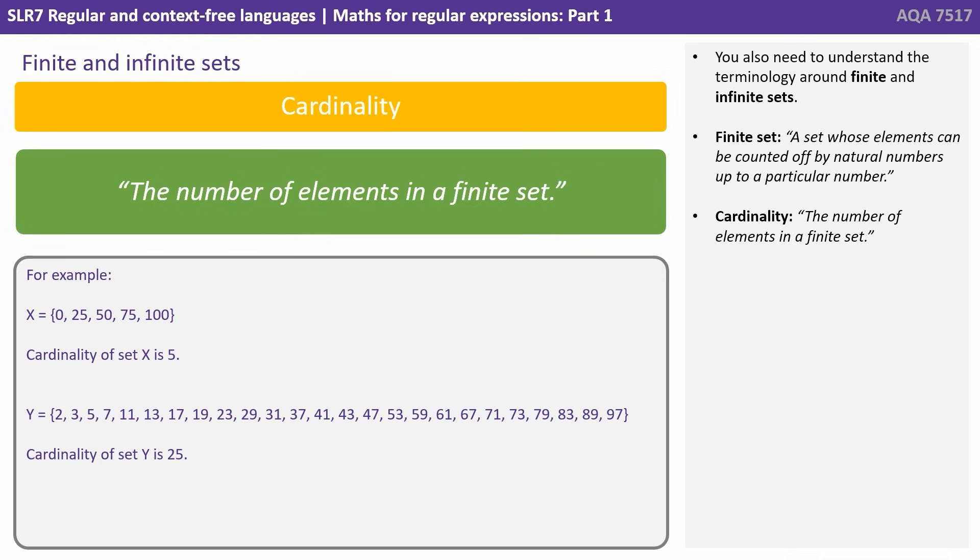Another term that's important is cardinality, and this refers to the number of elements in a finite set. So in our first example, the cardinality of set X is 5, and our second example, the cardinality of set Y is 25.